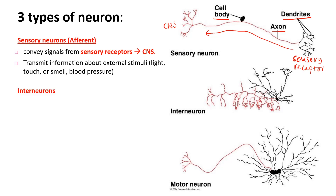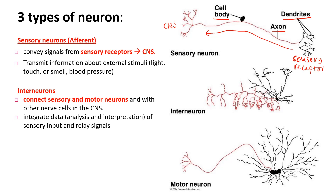The second type is interneurons. They connect sensory and motor neurons as well as other cells in the CNS — not only linking sensory and motor neurons but also connecting one neuron to another within the CNS. Interneurons integrate sensory input data and relay signals. They receive stimuli from sensory neurons or other neurons, then interpret, analyze, and send signals to motor neurons or other neurons.